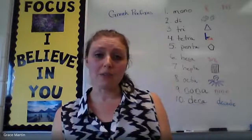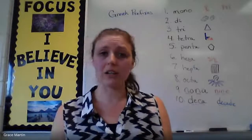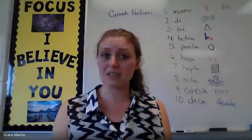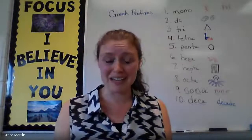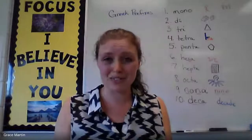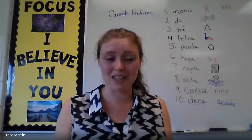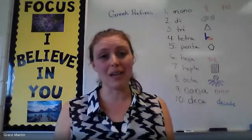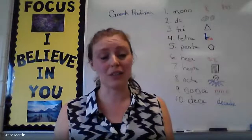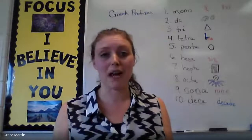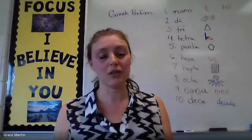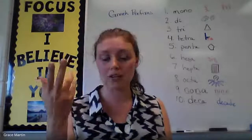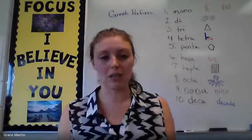Five is penta. Pretty much everyone is aware of the US Pentagon, even if you're Canadian — students still know what the Pentagon is. They can draw a pentagon too; usually they've seen a pentagon in math class. So use a shape again, like triangle for tri and pentagon for penta.